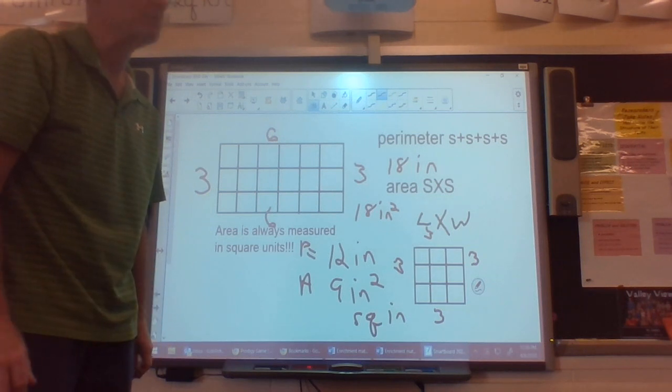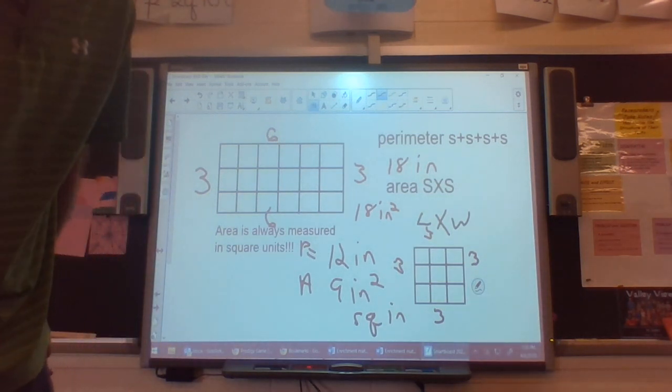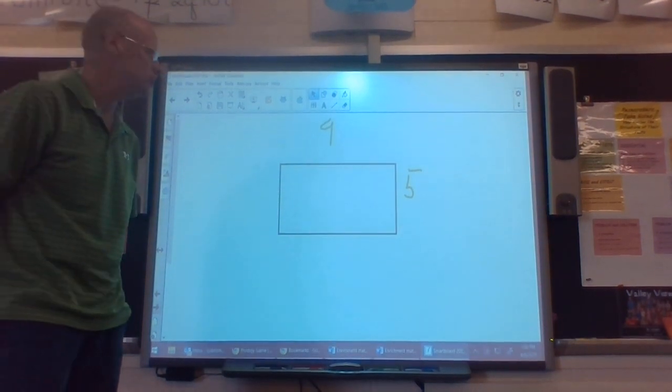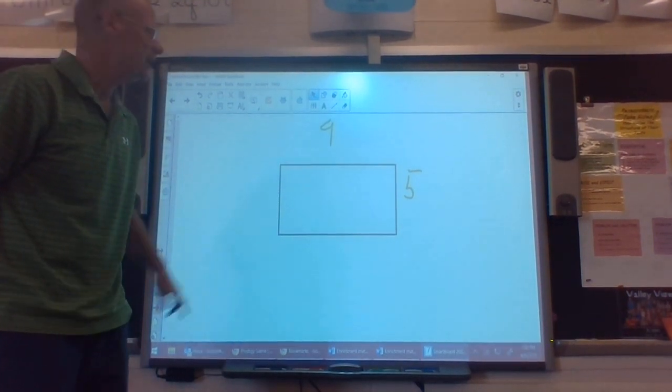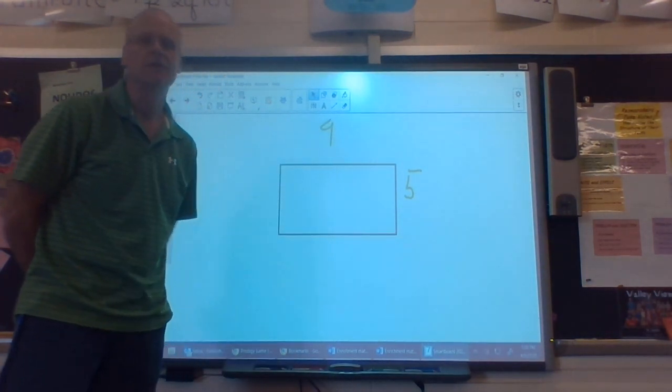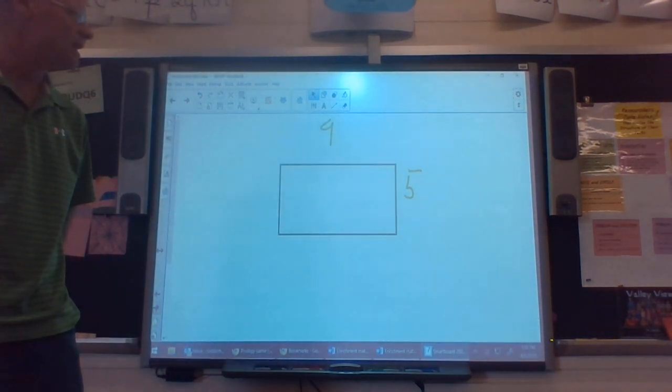I'm going to throw you another problem and see how you're doing this one. I threw another rectangle up here for you. One of my sides is nine and the other side is five. See if you can find my area and perimeter both for me for this rectangle.